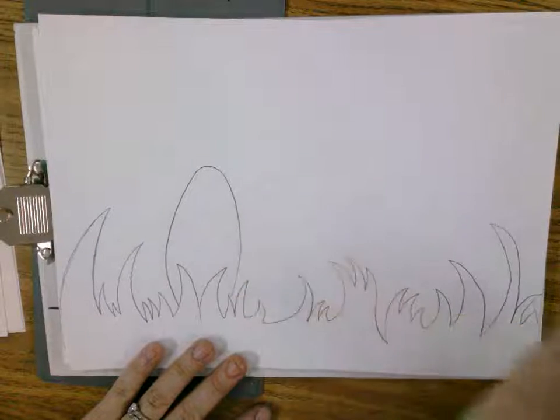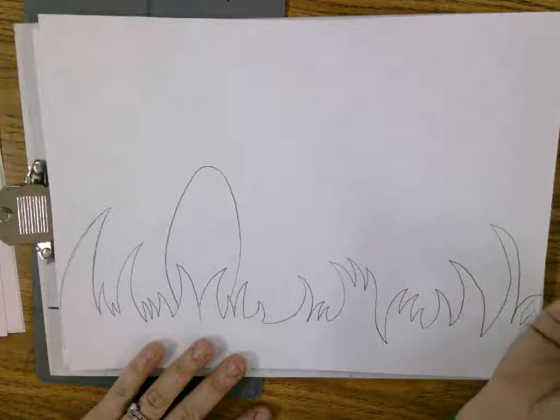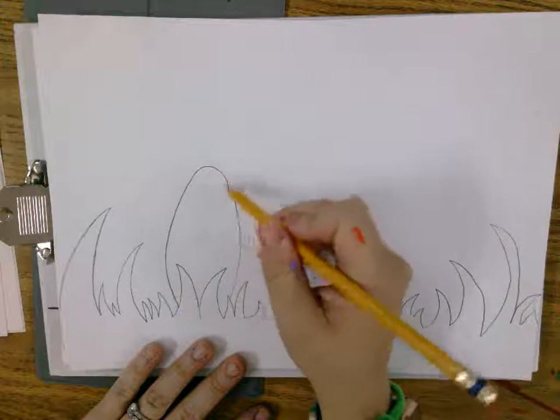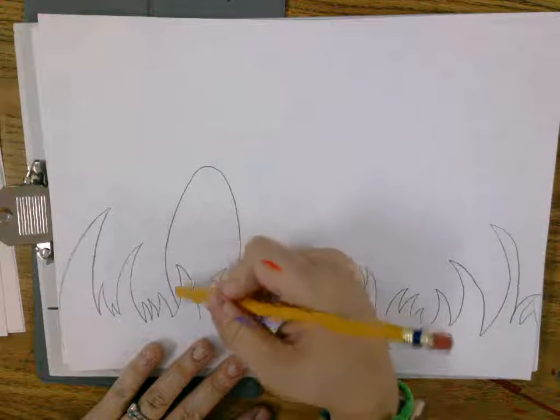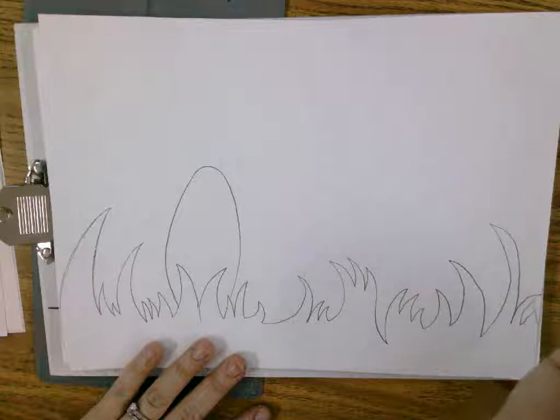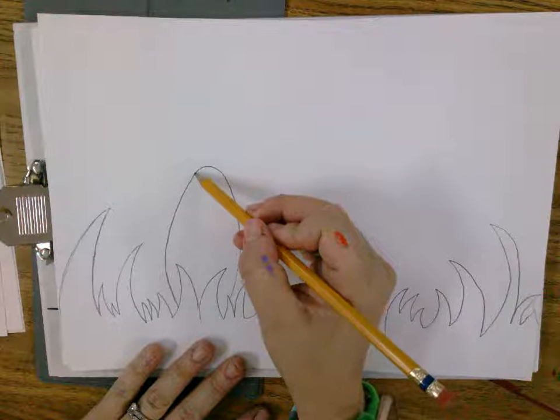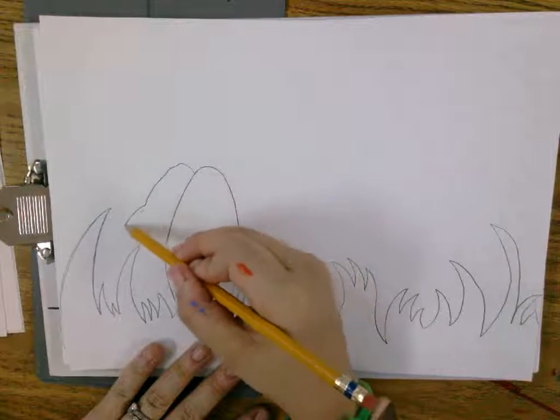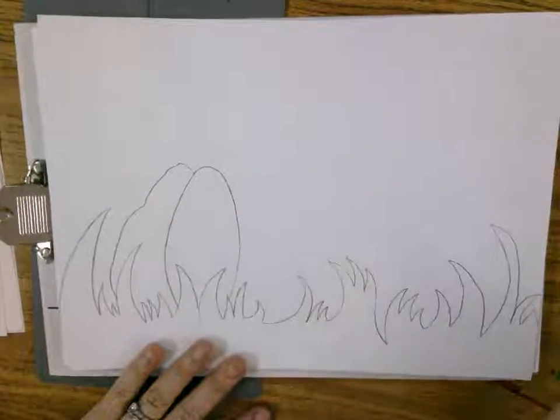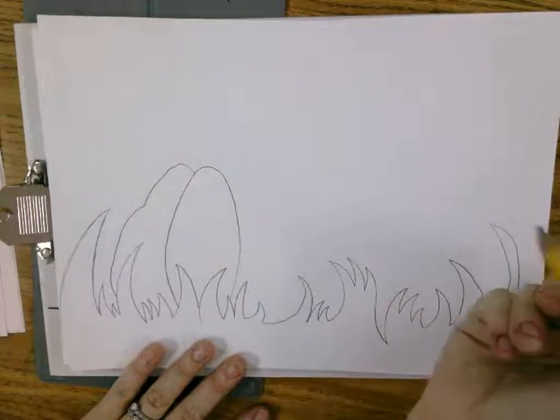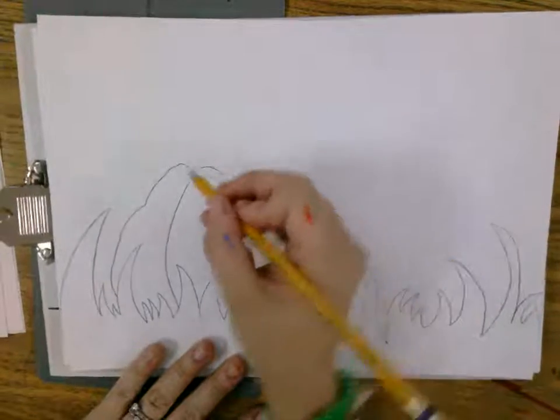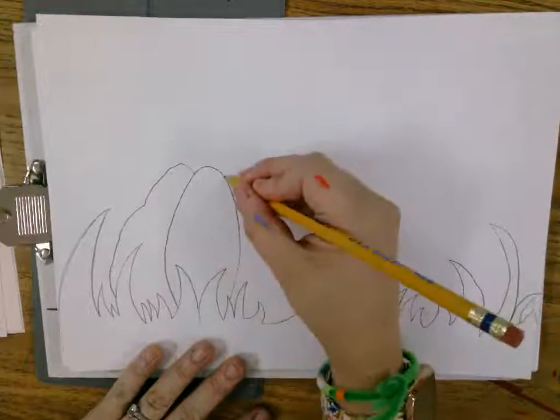Now, pumpkins aren't perfect, so don't worry about it if it's a little lumpy. I'm going to actually make mine a little bit lumpy over here. There you go. There's some lumpy. Go back to the top. You can make like a C shape if you want it to be more perfect, and a backwards C shape.